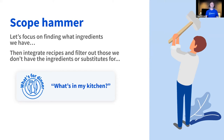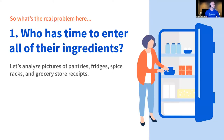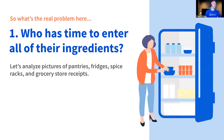The real problem I'm trying to solve: who has time to enter all their ingredients? I can't go through my fridge, pantry, and spice rack and enter every ingredient one by one — I'd spend as much time doing that as cooking for the rest of the month. So I thought this API would have to do something to allow me to speed that up.